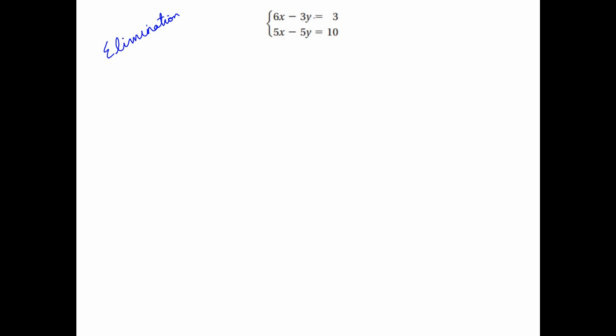So how do I make a negative 3 into a 15? I need to multiply this entire equation by 5. And then how can I make this negative 5 into 15? Well, this one would be a negative 15, so I want to make this one a positive 15. Remember, you want them to be opposites — that's going to be the big thing here, opposites. So how can I make this a positive 15? I can multiply it by a negative 3. So let's go ahead and do that.